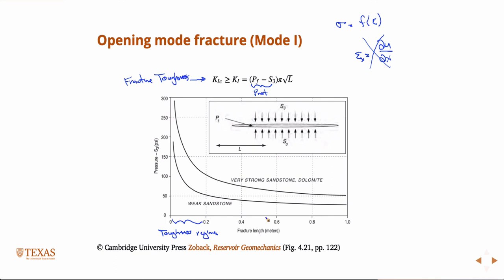And again, there's a lot of simplifications in this model. This is assuming that it's an elliptical shaped fracture growing in an infinite body, loaded exactly like that, not considering any poroelastic effects. So there's a lot of assumptions in this model. But this is kind of the simplest thing you can do.